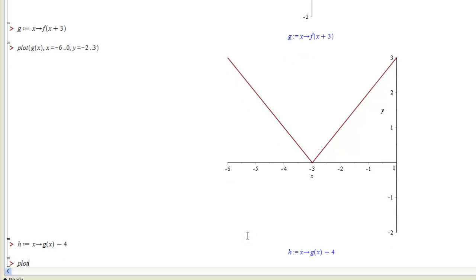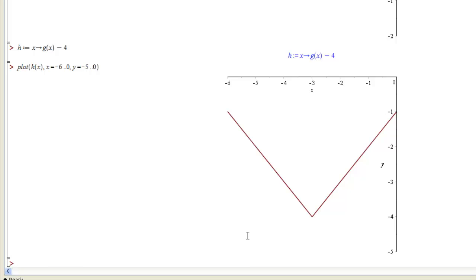Now if we plot this, maybe let's take x from negative 6 to 0 again, but we've shifted down, so maybe y should go from negative 5 to 0. And we see we've now got the absolute value function shifted 3 to the left, that was g of x, and then we shifted down by 4 for this h of x.